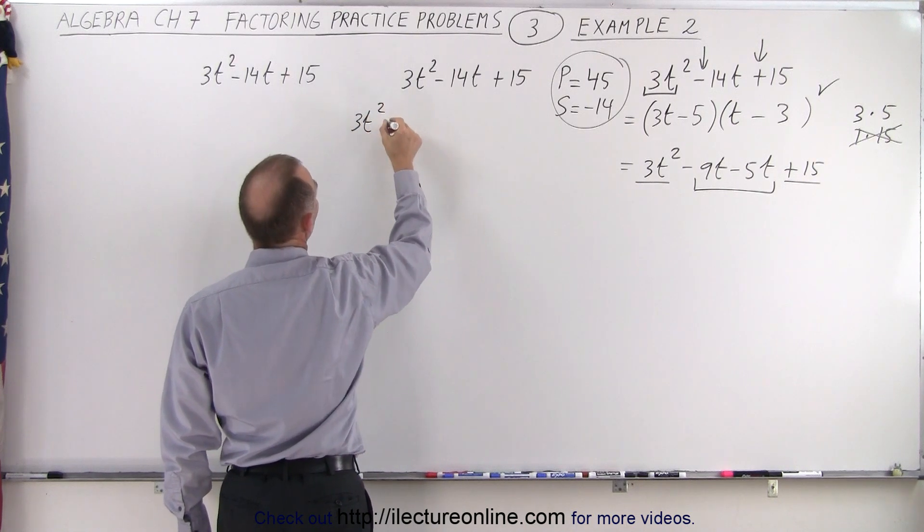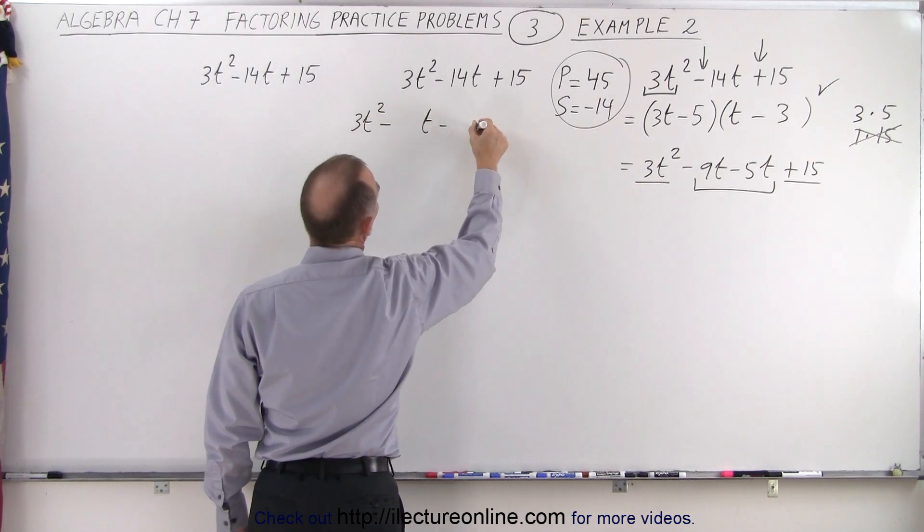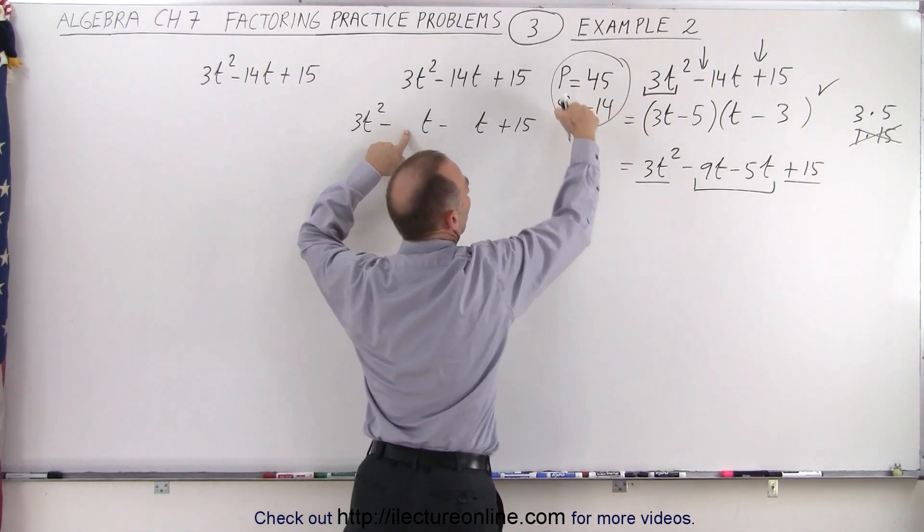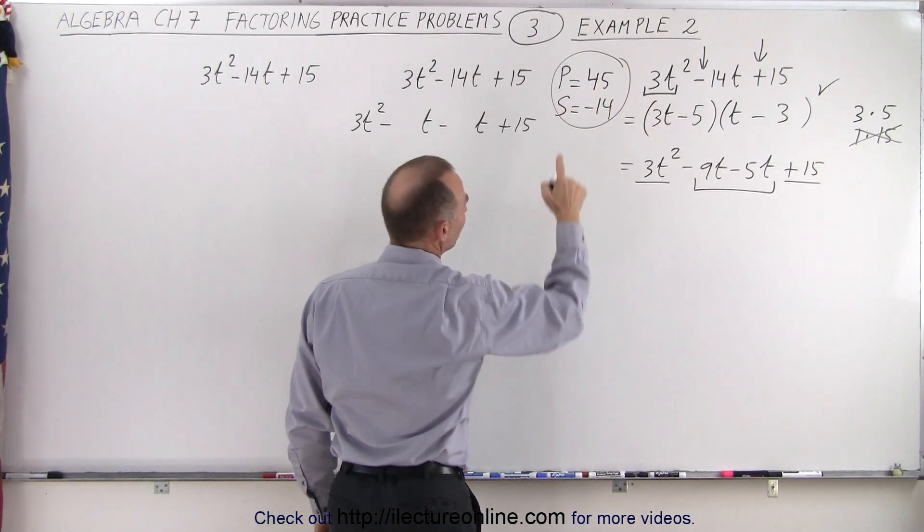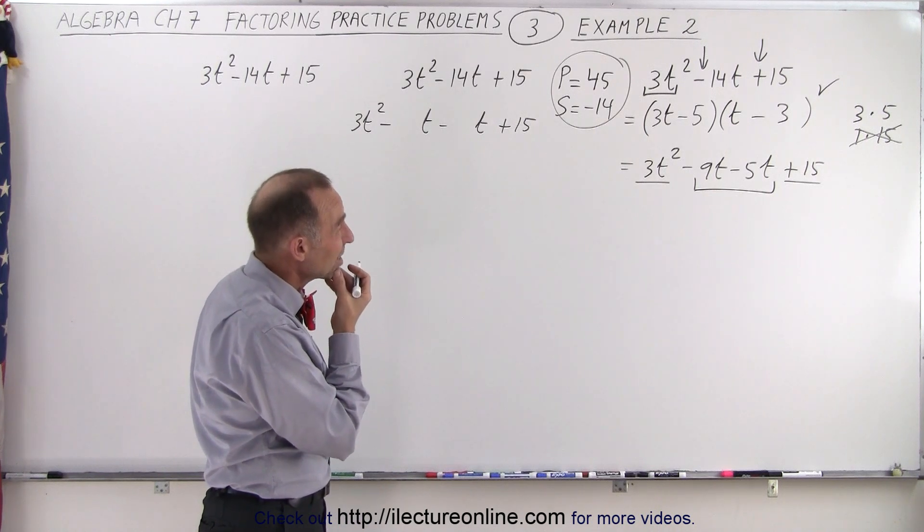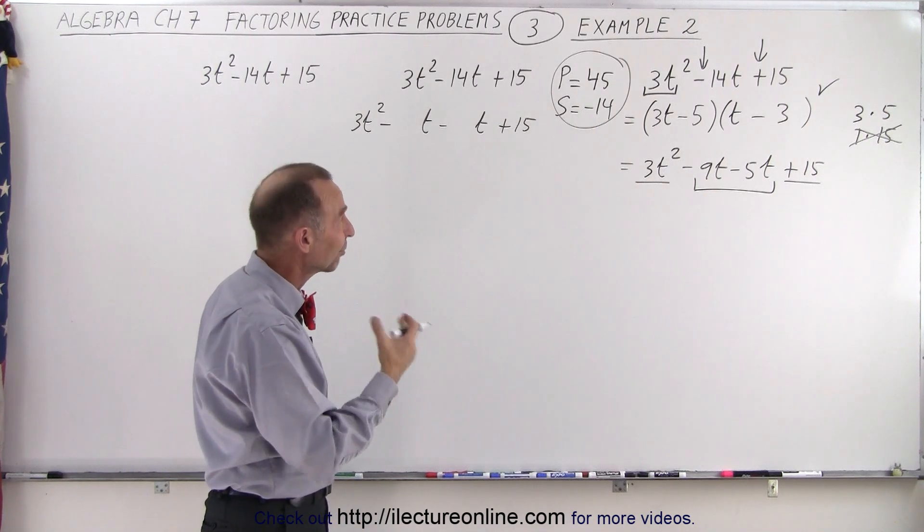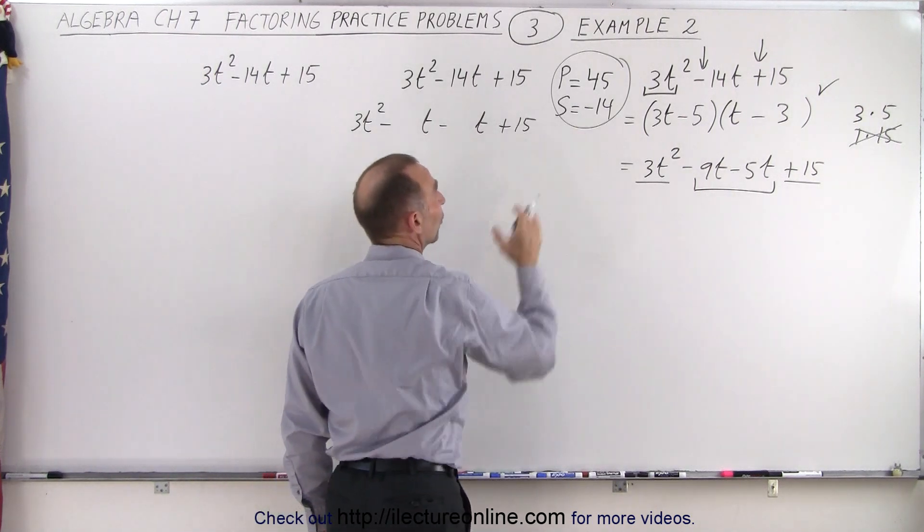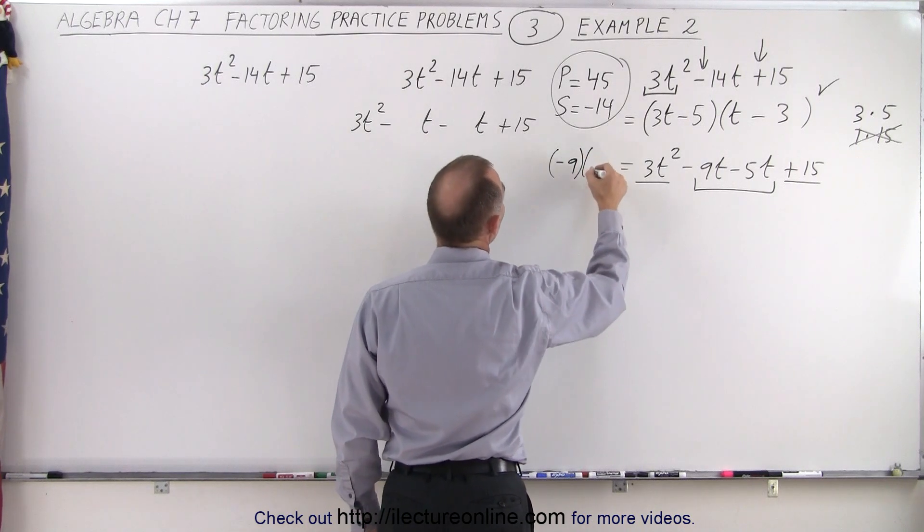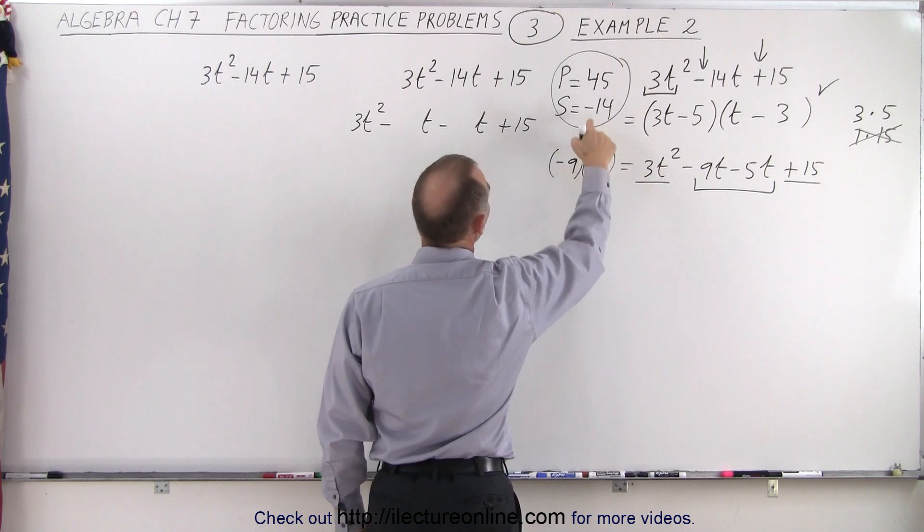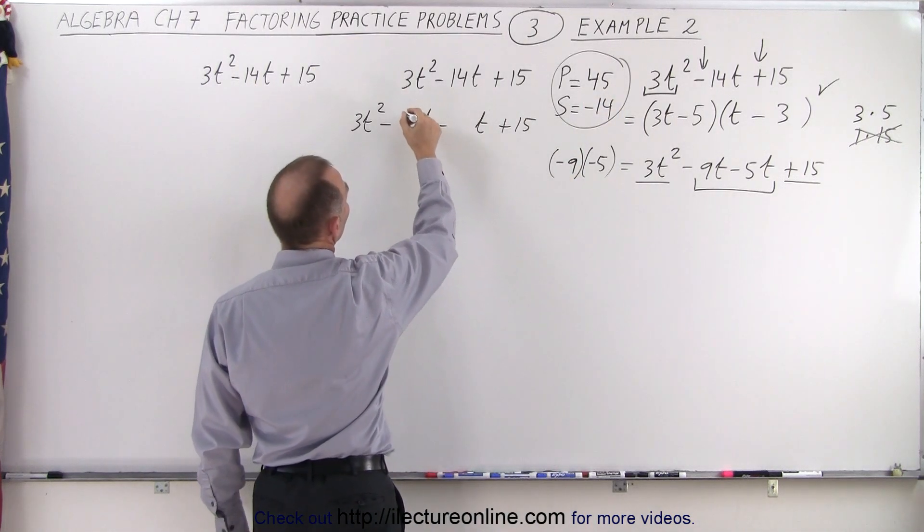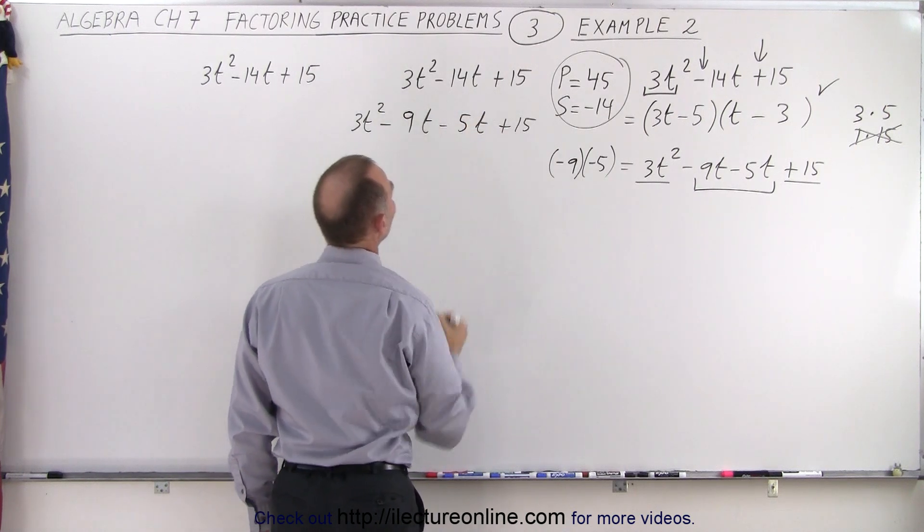So this becomes 3t squared minus something t minus something t plus 15. And the two numbers that go in here will be determined by this right here. So we know that the product is going to be 45 and the sum minus 14. Well how do we get 45? Well 3 times 15 but that doesn't add up to minus 14. How about 9 and 5? Yes if we multiply a minus 9 times a minus 5 together that adds up to minus 14 and multiplied adds up to a positive 45. So we're going to rewrite this as a minus 9t and a minus 5t.